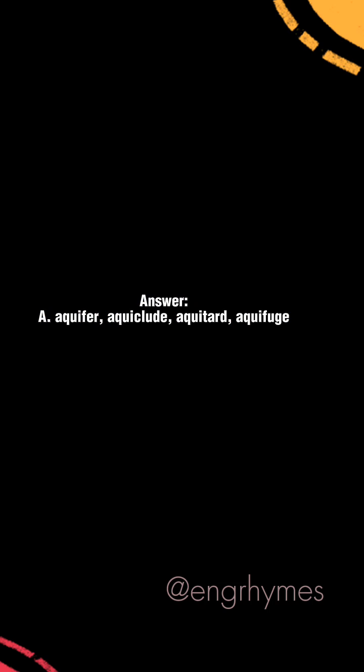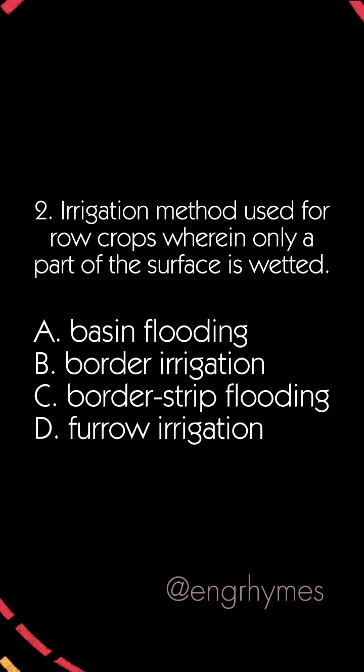Answer: A. Aquifer, aquiclude, aquitard, aquifuge. Next question: Irrigation method used for row crops wherein only a part of the surface is wetted.